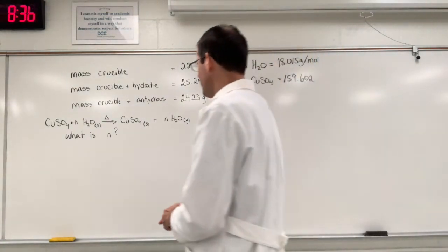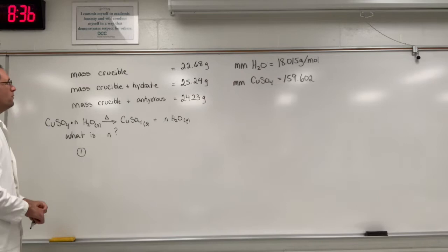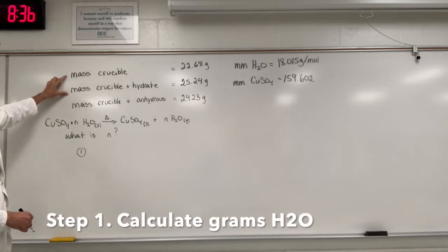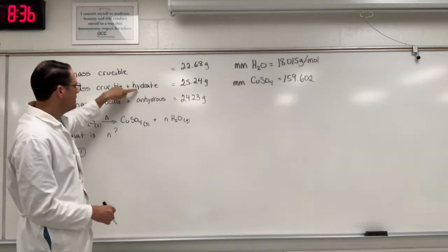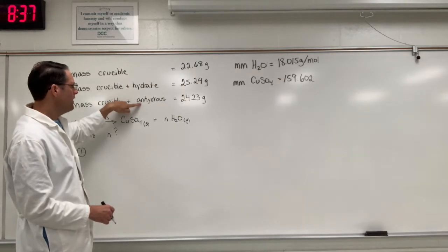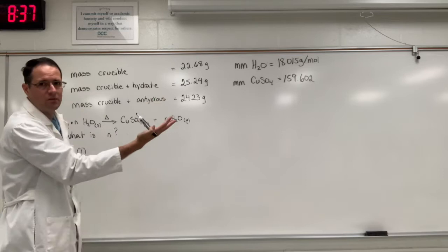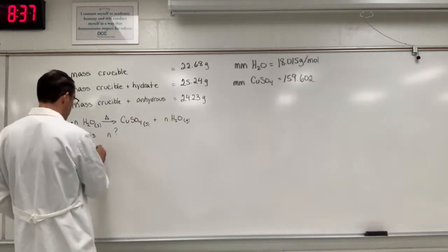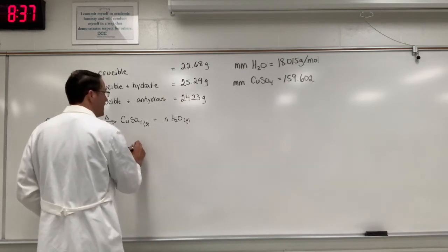All right. So step one, we want to first calculate the mass of water that was lost in this reaction. And so this is the hydrate with water. This is the anhydrate without water. So that difference is going to be, you can see, just by examination, 1.01 grams. But I'll show you the math in case your chemistry instructor really would like you to show the math.